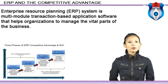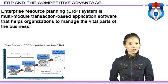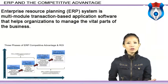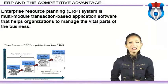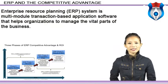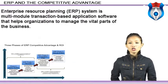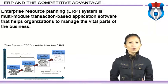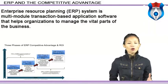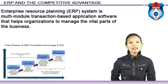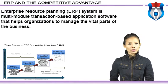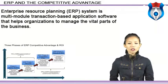Let's start with what an Enterprise Resource Planning (ERP) system is. An ERP system is a multi-module transaction-based application software that helps organizations to manage the vital parts of the business. While ERP systems are often the preferred solution, many of the legacy systems they replaced offered a great deal of value from their unique bespoke features.